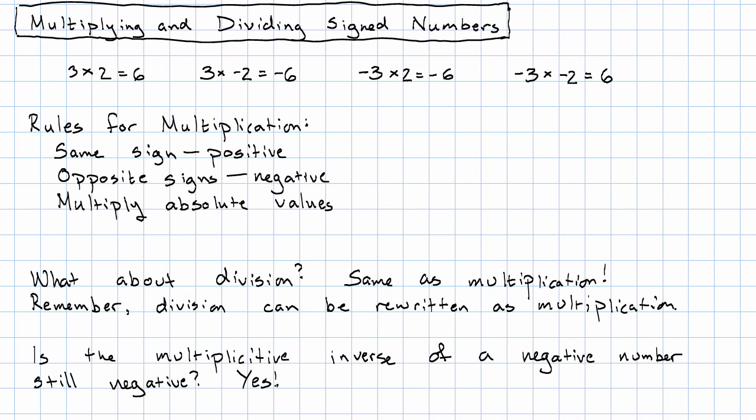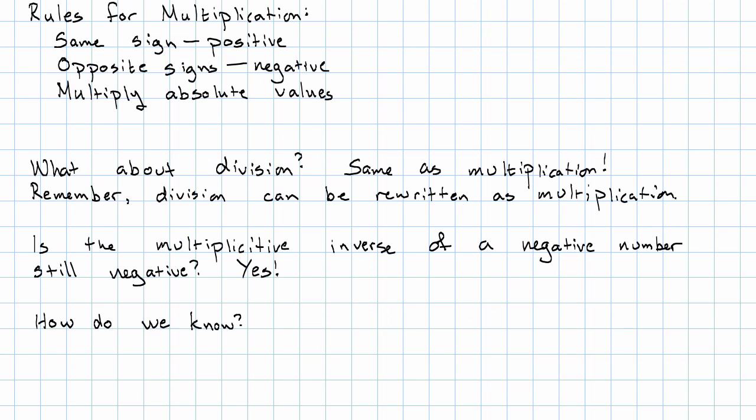How can I know for sure? Well, remember, we said that the multiplicative inverse is a number. So that when we multiply a number by its multiplicative inverse, we get one. And that one is a positive one. And since a number times its multiplicative inverse is positive, they must have the same sign.